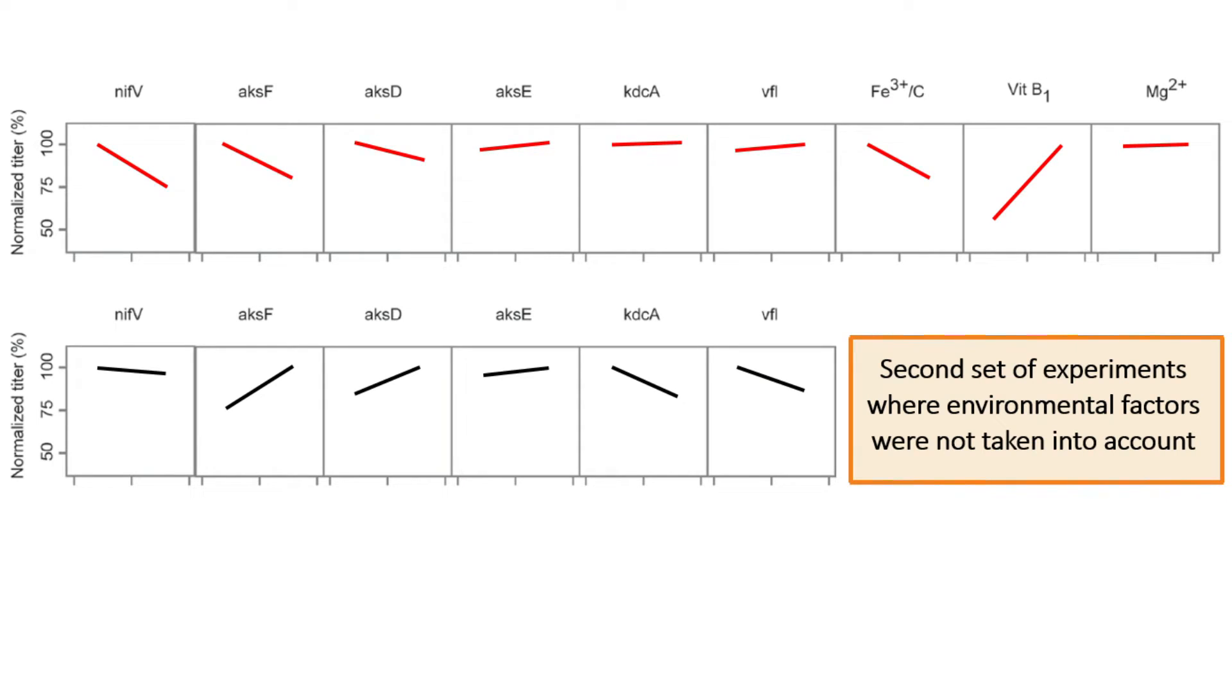for some factors, opposite slopes are predicted by the analysis of the two datasets. This leads to different predictions in the directions that the expression levels should change to further optimize the system.